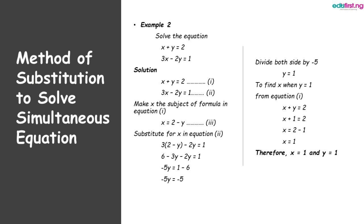We substitute this value for x in equation 2. So we have 3(2 minus y) minus 2y equal to 1. We expand the bracket and we have 6 minus 3y minus 2y equal to 1. Now we have minus 5y equal to 1 minus 6, which gives minus 5y equal to minus 5. We divide both sides by minus 5 and we have y equal to 1.